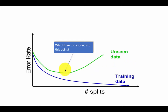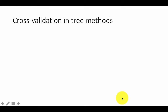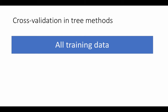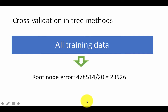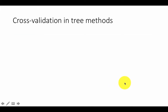To determine the optimal tree — the size that gives optimal results on unseen data — R uses a technique called cross-validation. This is somewhat advanced, so if you find it difficult you can let it go. In all our training data we already know the total error or deviance is 478,514 across 20 cases, so the average deviance is 23,926.